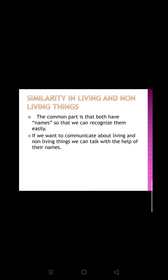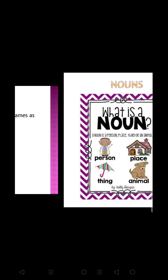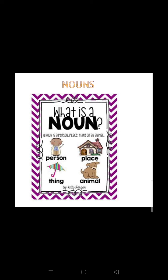If we want to communicate about anything or learn any new thing, we should first know its name. So kids, a name plays an important role to differentiate between various things. In English grammar, we call these names as naming words or nouns. Nouns can be a name of a person, a place, a thing, or an animal.